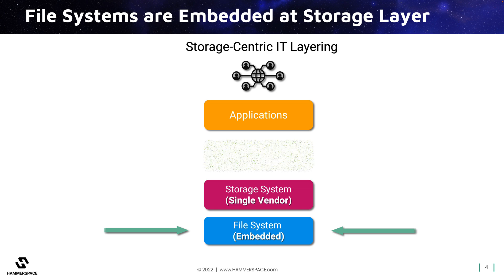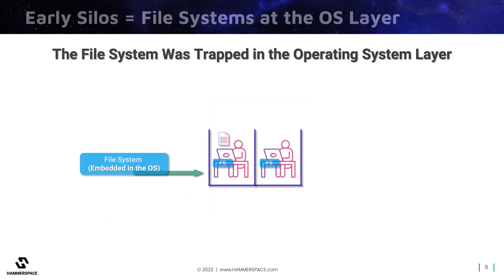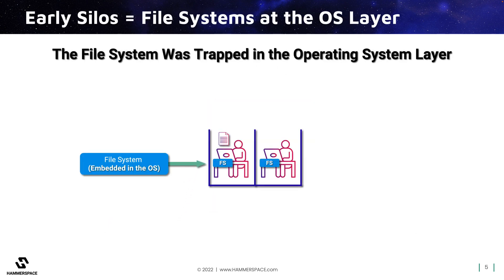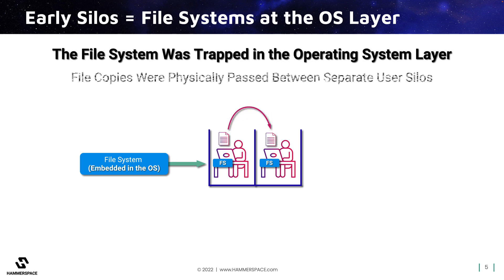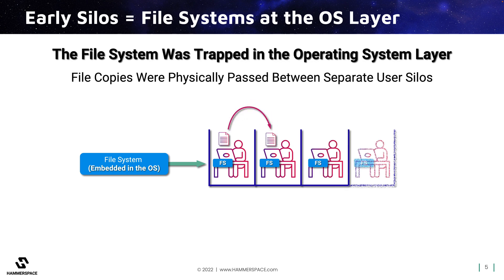But to share those files, we typically have to copy them. If you think back to the 90s, the file system was embedded in the operating system of each individual PC. If a user needed to share a file, they had to put it on a floppy disk and physically hand it to someone who then put it into the file system on their PC.